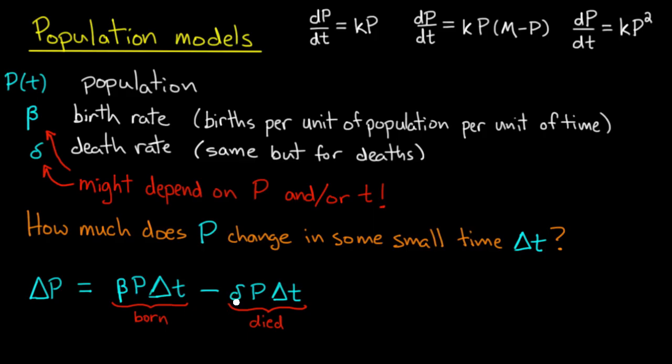And the number that die is delta times P times Δt. And so ΔP is the difference of those two quantities.